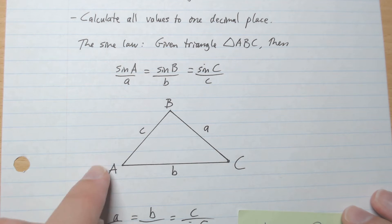So what is the sine law? Given a triangle ABC, then sine A over a equals sine B over b equals sine C over c.